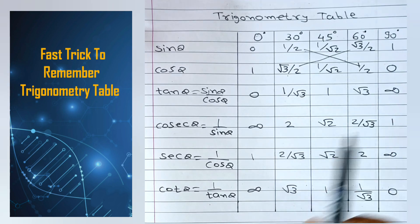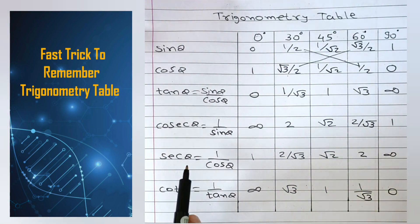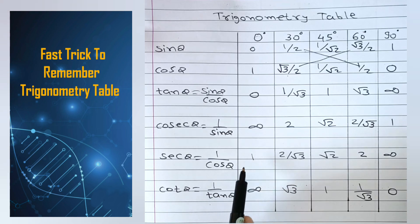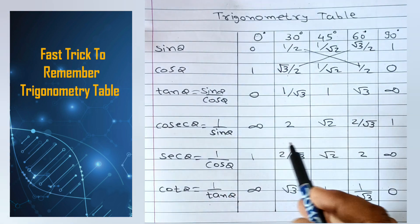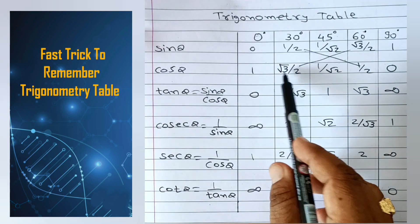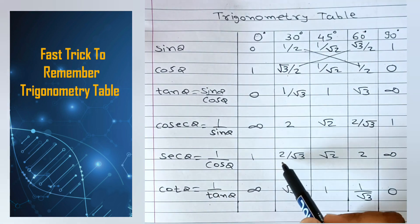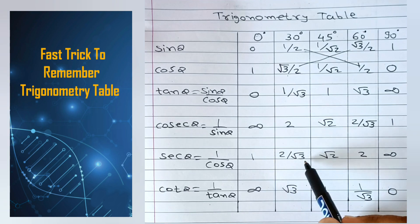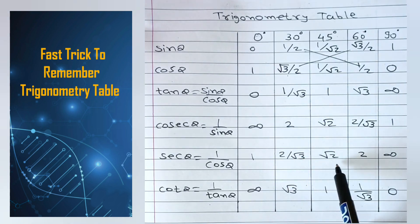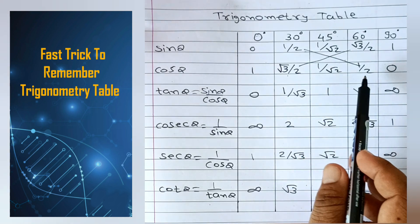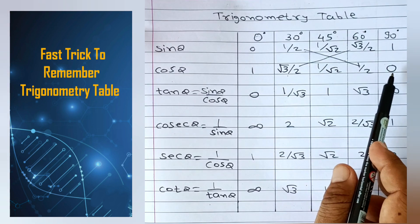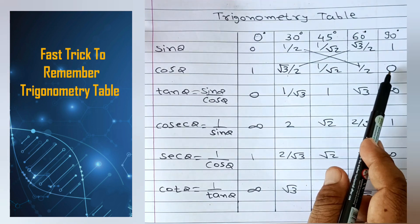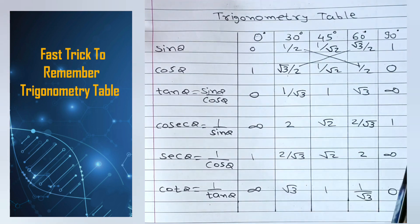Sec theta is 1 upon cos theta. So here: 1 upon 1 is 1; 1 upon root 3 by 2 means you can write down 2 upon root 3; 1 upon 1 upon root 2 you can write down root 2; and 1 upon 1/2 you can write down 2; then 1 divided by 0 is infinity.